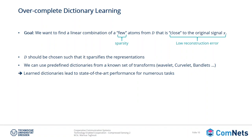For over-complete dictionary learning, the goal is to find a linear combination of a few atoms from D that is close to the original signal X, with a very low reconstruction error. Remember that D should be chosen such that it sparsifies the representation — otherwise what is the point? You can also use predefined dictionaries or frames from well-known transforms, such as DCT, Wavelet, Curvelet, or Bandlets. However, the key difference is that a learned dictionary can lead to state-of-the-art performance for numerous tasks.